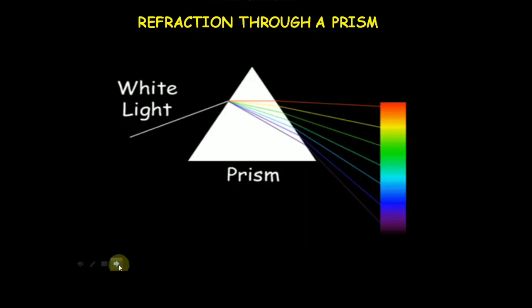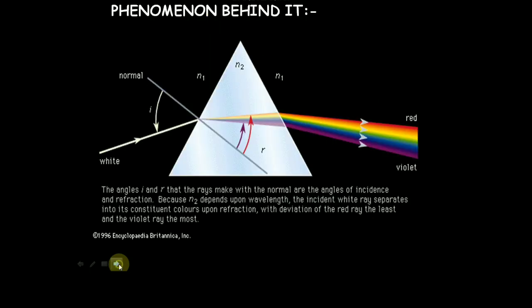Refraction through a prism. When white light is passed through a prism it gets diffracted into seven colors. This is the phenomenon behind it. The angles i and r that rays make with the normal, or the angle of incidence and refraction, depend upon the wavelength. The incident white ray separates into its constituent colors upon refraction, with the deviation of the red ray the least and the violet ray the most.